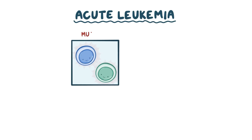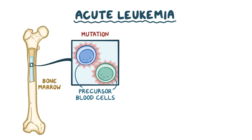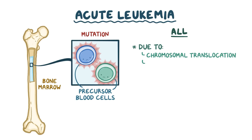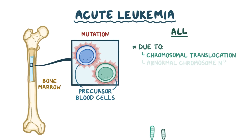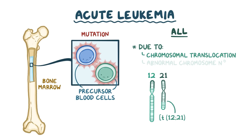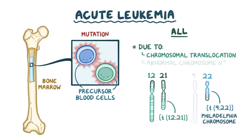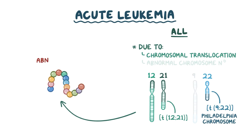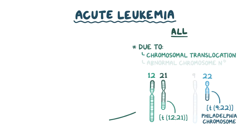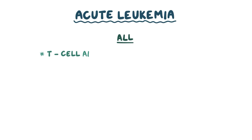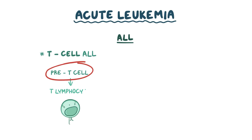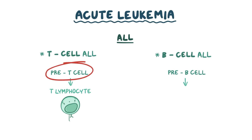Acute leukemia is caused by a mutation in the precursor blood cells in the bone marrow. In the case of ALL, it's usually due to a chromosomal translocation or an abnormal chromosome number. Common chromosomal translocations include translocation of chromosomes 12 and 21, and translocation of chromosomes 9 and 22, also called the Philadelphia chromosome. These result in production of abnormal intracellular proteins, which affect the cell's function and cell division. ALL can further be classified into T cell ALL, where there's proliferation of T cell precursors, and B cell ALL, where there's proliferation of B cell precursors.